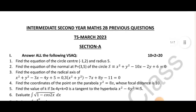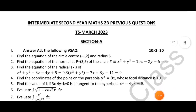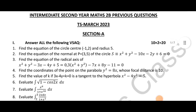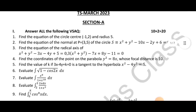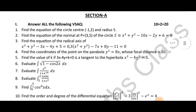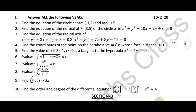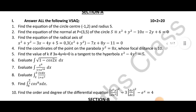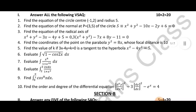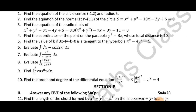This is the Telangana March 2023 question paper. First question: find the equation of a circle with center (-1, 2) and radius 5. Second question: find the equation of the normal. Third: find the equation of the radical axis. Fourth: find the coordinates of a point on the parabola. Fifth: tangent to hyperbola. Sixth and seventh: integration problems.